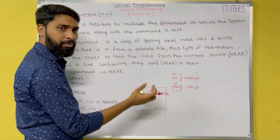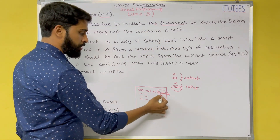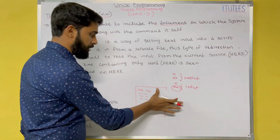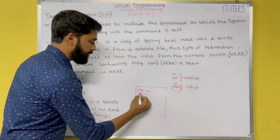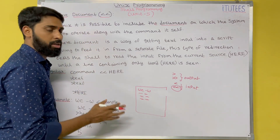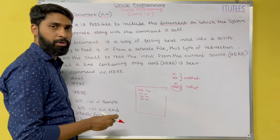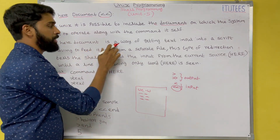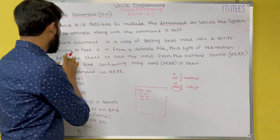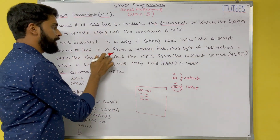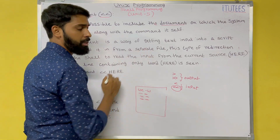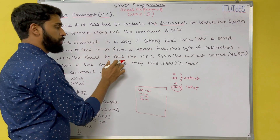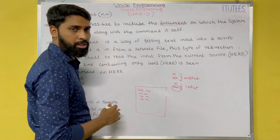The wc command is nothing but word count. In this case, I want to count the words in the sample file. Using the same command, I do the content in the same shell. A here document is a way of getting text input into a script without having to feed it in from a separate file. This type of redirection tells the shell to read the input from the current source only.